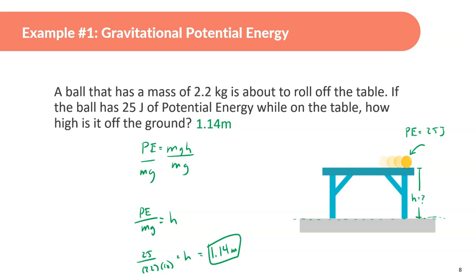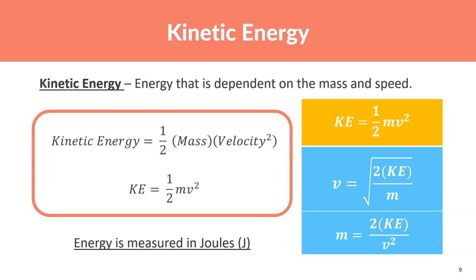Now we're talking about kinetic energy — the energy of motion, dependent on mass and speed. The formula is KE = ½mv². The faster something moves, the more energy it has. A car going 50 mph slamming into something has far more energy than one going 2 mph.